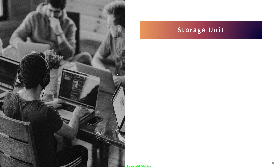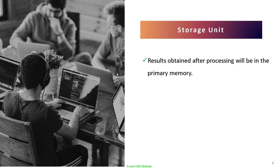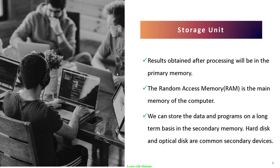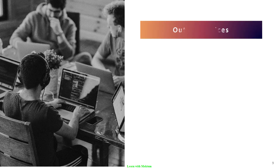The last unit is the storage unit. Results obtained after processing are stored in primary memory — RAM, the random access memory, which is the main memory of the computer used to store data temporarily. We can store data and programs on a long-term basis in secondary memory, such as hard disks and optical disks.